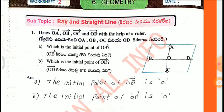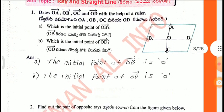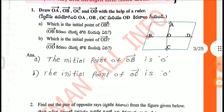Which is the initial point of OB? Which is the initial point of OD? After drawing, the initial point of OB is O, and the initial point of OD is O.